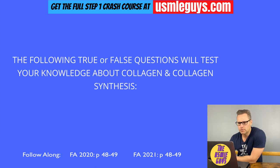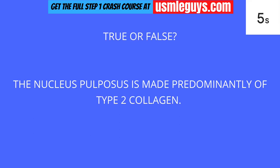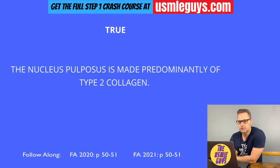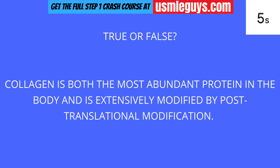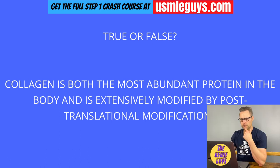Kartagener syndrome is characterized by findings due to impairment of migration and orientation of certain structures — recurrent infections, infertility because sperm aren't motile, and hearing loss. We can screen for it by testing nasal nitric oxide levels, which will be decreased if the syndrome is present. Now let's do true/false questions testing our knowledge about collagen and collagen synthesis. True or false — this is true.